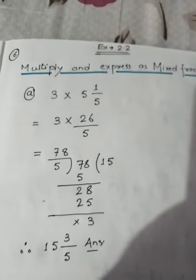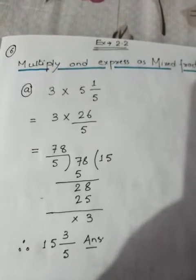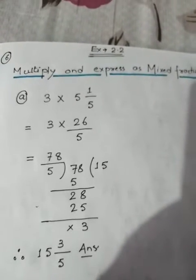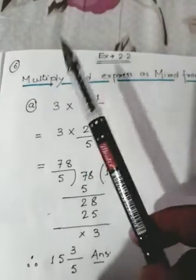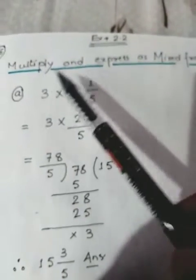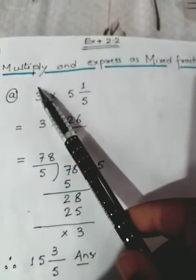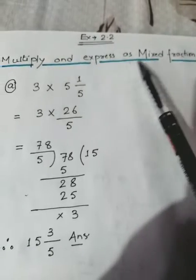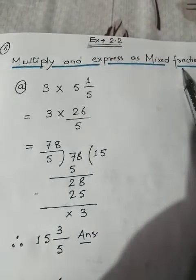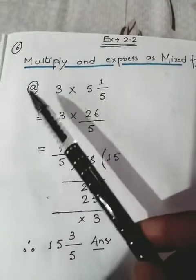Students, today we will do question number 6 and question number 7 of exercise 2.2. Let's see what question number 6 is saying — it is saying multiply and express as a mixed fraction. These are very simple sums.